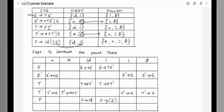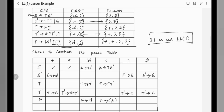Now we check the parse table. In the parse table, if each cell has at most one entry, then the grammar is LL1. Looking at the table, every cell has at most one entry, so it is very clear that this is an LL1 grammar. Therefore, this is an LL1 parser. Thank you.